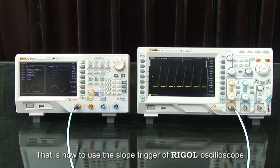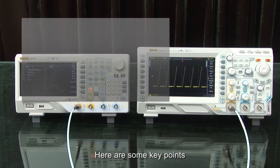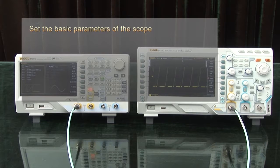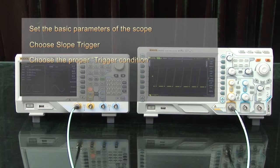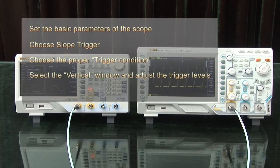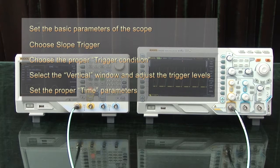That's how the slope trigger for the Rigol oscilloscopes is configured. Here's a summary of the key points: set the basic parameters of the scope, choose the slope trigger, choose the proper trigger condition, select the vertical window and adjust the trigger levels, and then set the proper time frame.